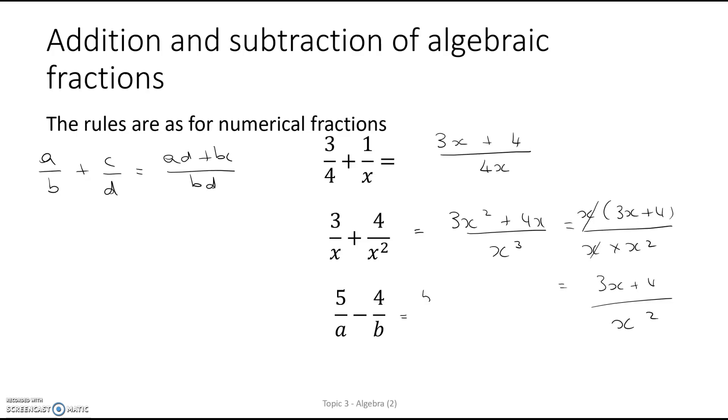The last example would be 5b minus 4a over ab. No common factors there so we can't cancel anything out. The final answer just has to be 5b minus 4a.